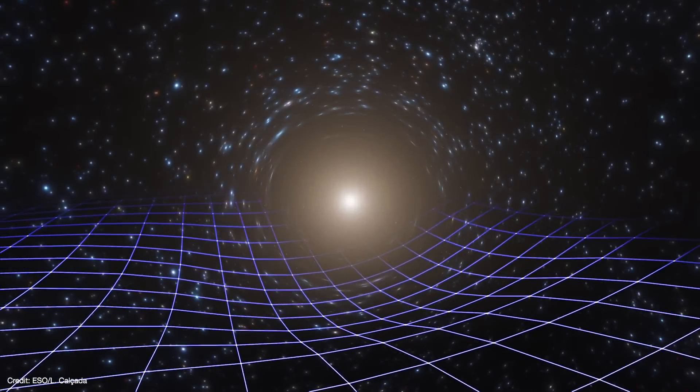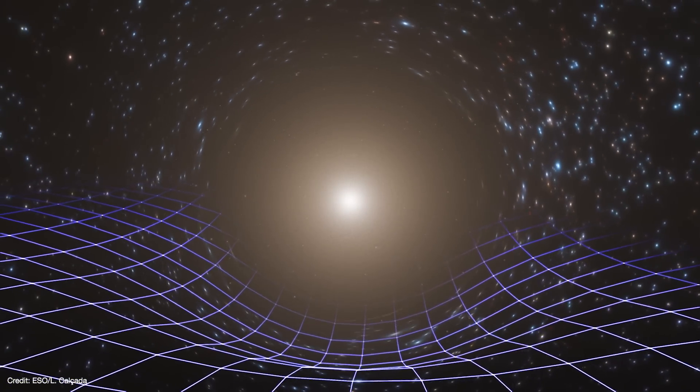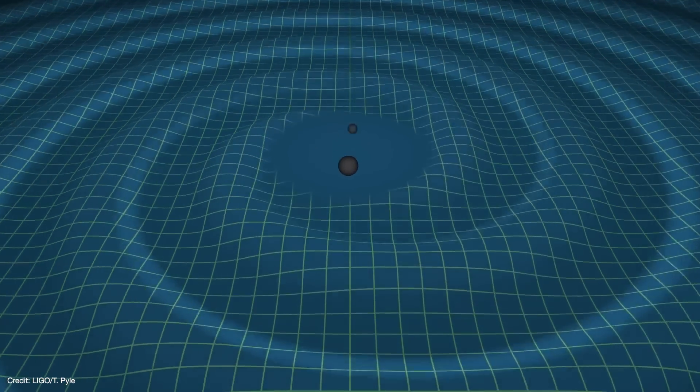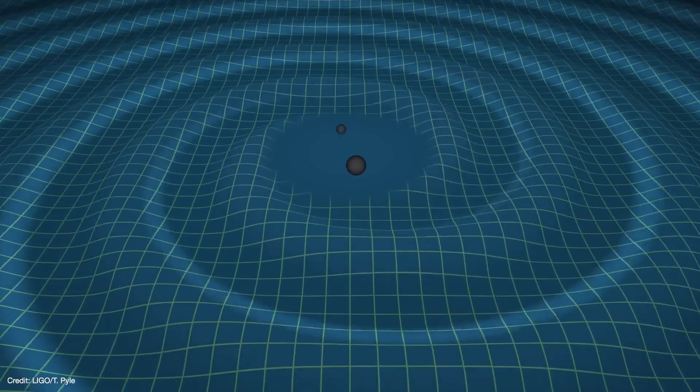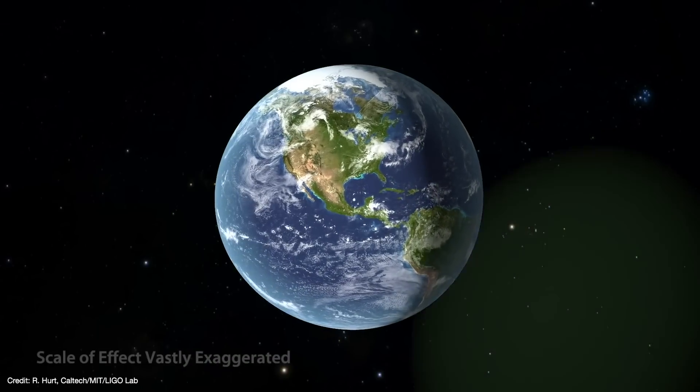General relativity says that gravity is caused by mass distorting spacetime. But if that mass is accelerating, it can create waves in spacetime as well. Because gravitational waves are ripples in the fabric of spacetime, they don't require any medium to pass through. So they propagate unimpeded at the speed of light, whether it's going through the vacuum of space or through the core of a planet.